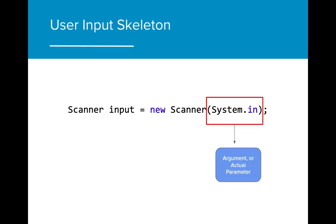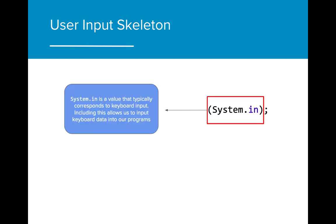The last component is the argument, or actual parameter, that is being input into the Scanner. An actual parameter is a variable or value that you want to use in a given program. In order to create this new Scanner, we must give it the input value of System.in. System.in is a value that typically corresponds to keyboard input. Including this allows us to input keyboard data into our programs, and it belongs to the same class as System.out.println.